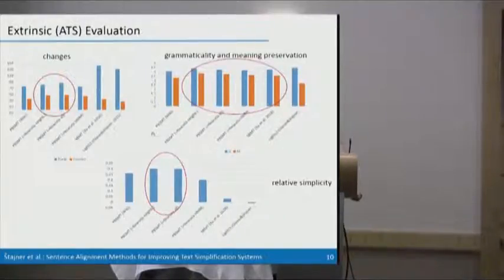So the results of human evaluation of this automatically simplified output, what we see in terms of number of changes and their correctness, here on the left-hand side you see that when we add Newsela sentence aligned by our systems, we get much better amount of correct changes. In terms of grammaticality and meaning preservation, it doesn't matter how we aligned Newsela and added it. And also, this syntactic-based machine translation performs similarly. But in terms of relative simplicity, how much the evaluators see the automatically simplified sentences simpler than the original, both our best methods lead to much better results than the rest.